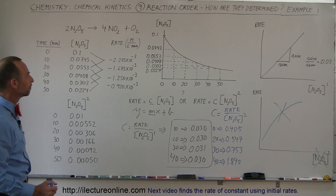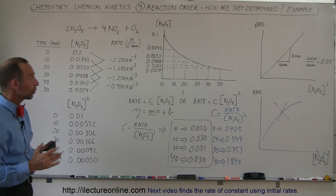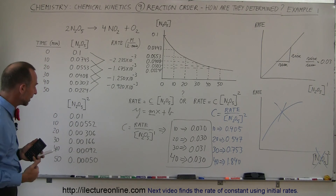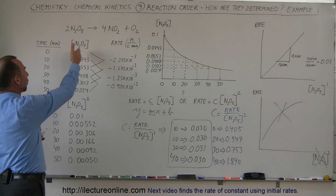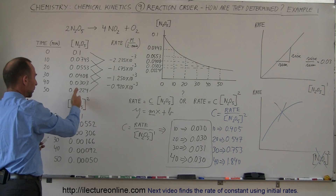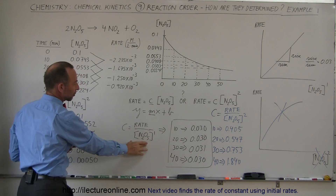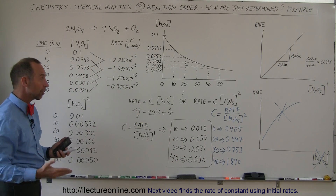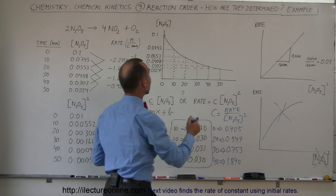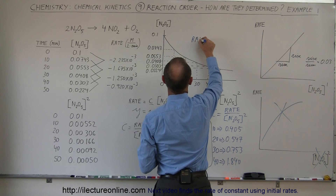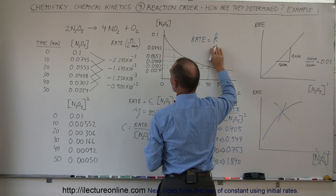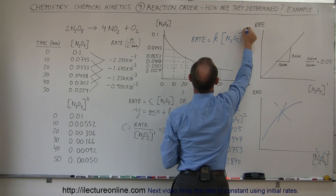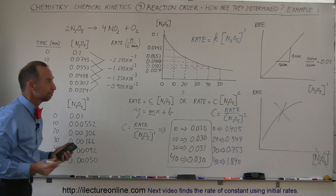That's one of the ways to determine reaction order. Calculate the reaction rates as the reaction proceeds, find the concentration at each interval and its square, then divide the rate by the concentration to the first power and then to the second power, and see which gives a linear relationship. In this case, the rate of the equation equals a constant k times the concentration of N2O5 to the first power — it's a first order reaction.